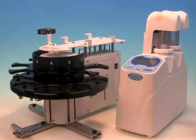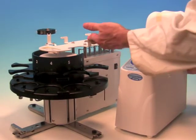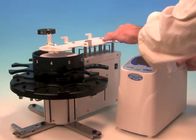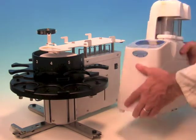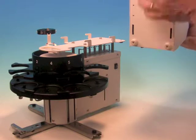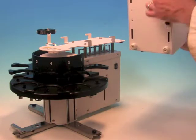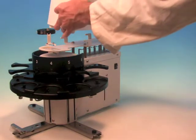This is the AT700 potentiometric titrator shown with the six position mini sample changer. The AT700 can be connected with the sample changer easily by aligning the pegs on top of the sample changer.